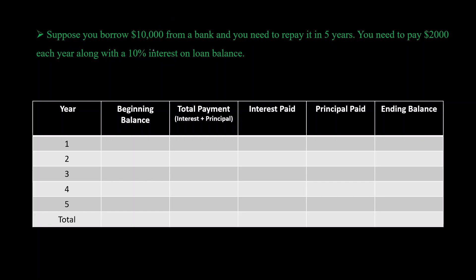Let's start with year one. The beginning balance is ten thousand dollars, and we pay ten percent interest on this loan balance: 0.1 × 10,000 = one thousand dollars. Then we pay two thousand dollars in principal. So the total payment is two thousand plus one thousand, which equals three thousand dollars.